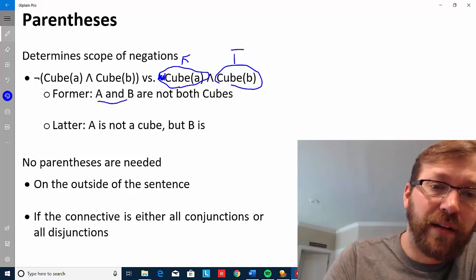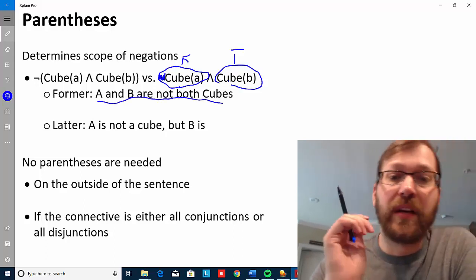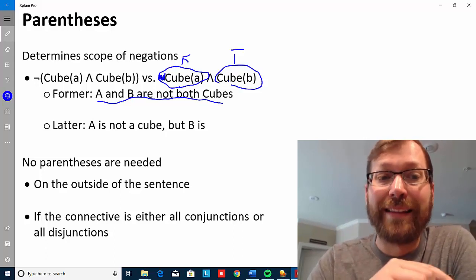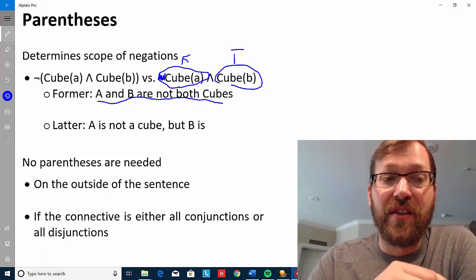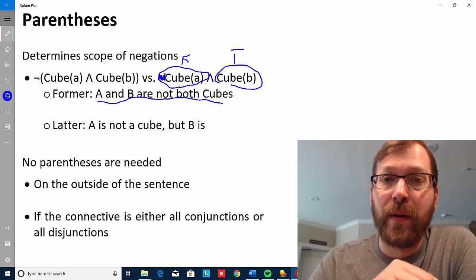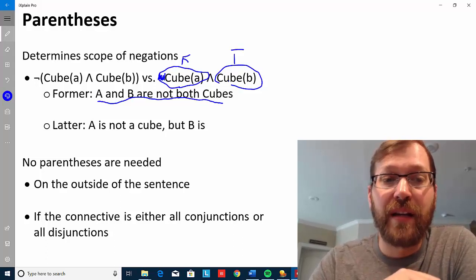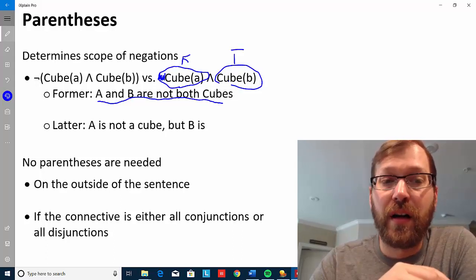For instance, the former means A and B are not both cubes. At least one of them is not a cube. Perhaps neither of them are a cube. Any of those cases would make the former sentence true.